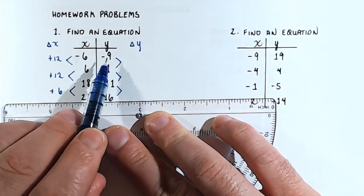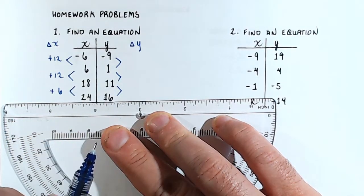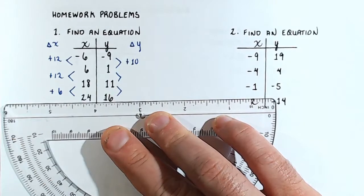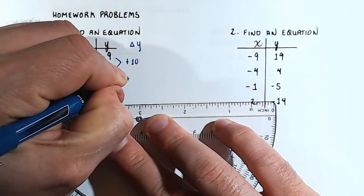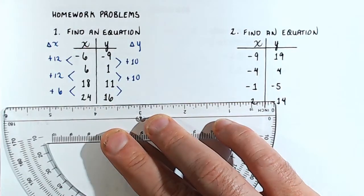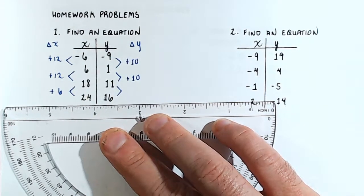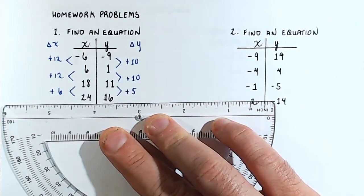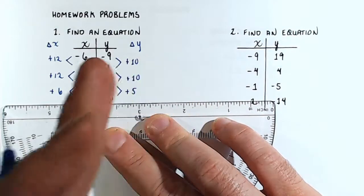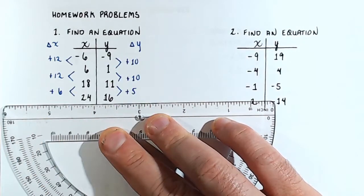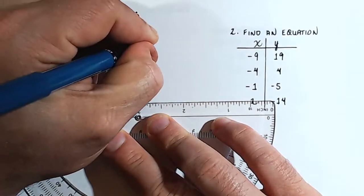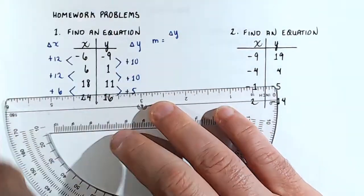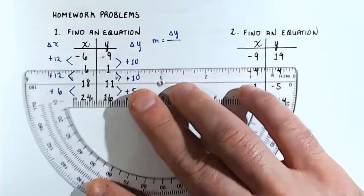On the y-side, between negative 9 and 1 that is plus 10. Between 1 and 11 that's plus 10. And between 11 and 16 that's plus 5. Now we need to compute the ratio of change — this gives us the rate of change. So m equals the change in y over the change in x.